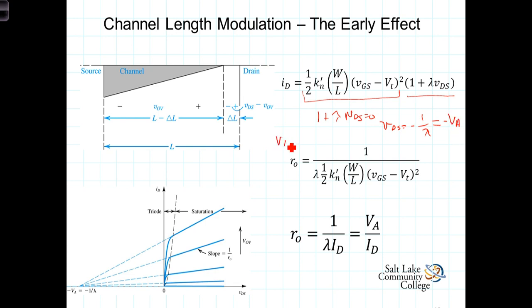That corresponds to the value on the negative VDS axis, where the lines representing the slopes of these, or the lines representing the current's dependence on VDS, where those lines intersect, they cross the horizontal axis at a value equal to negative 1 over lambda. Or as we've said, that term is defined as V-sub-A. And that V-sub-A term is known as the early effect, or the early voltage.